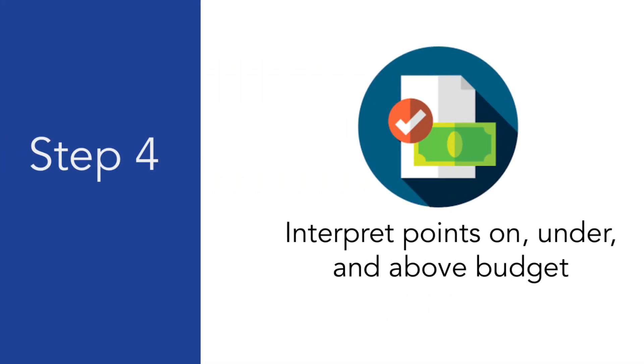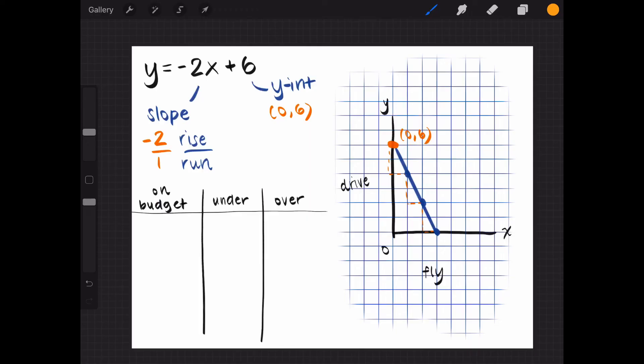We can use this line to help us with the next part. We need two combinations that fit within her budget, so I'm going to pick any two points. This first one has a coordinate point of 1, 4, which means Raina can fly once and drive 4 times. The second point has a coordinate of 3, 0. This means Raina can fly 3 times but drive 0. These two points fit within her budget.